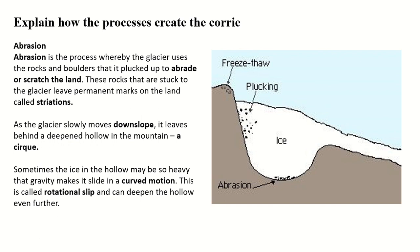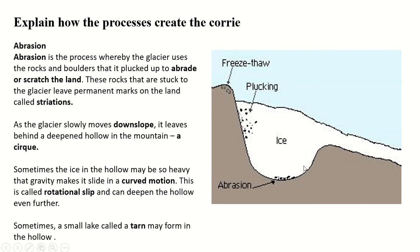Freeze-thaw action, plucking, and abrasion all combine to form a deepened hollow in the mountain — your cirque. Sometimes the ice in the hollow is so heavy that gravity makes it slide in a curved motion — this is called rotational slip, and it can deepen the hollow even further. The hollow started from a very small hollow from freeze-thaw action, and through plucking, abrasion, and rotational slip it got bigger, wider, and deeper. When it rains, the hollow fills with water and a tarn forms.